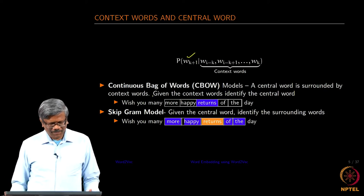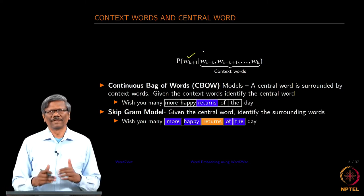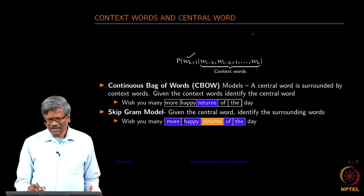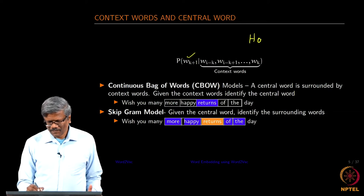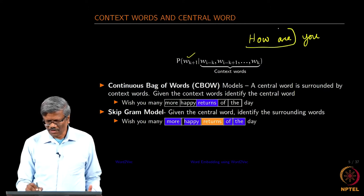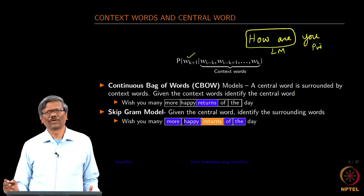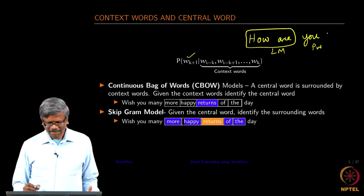In the case of a continuous bag of words, a central word is surrounded by the context words. In the case of the language model, this is your context word, and this is the word you want to predict.